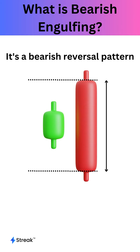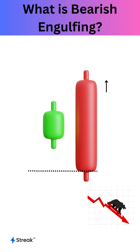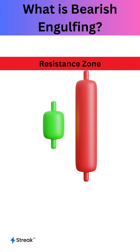A bearish engulfing pattern indicates that the momentum has shifted from positive to negative and that the market may be entering a downtrend. This pattern is most effective when it is formed at a level of resistance.